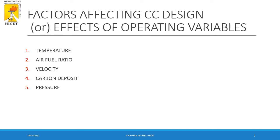The factors affecting combustion chamber design — also called the effect of operating variables — are temperature, air-fuel ratio, velocity, carbon deposits, and pressure. In a gas turbine engine, the maximum temperature in the Brayton cycle is the turbine inlet temperature. Due to structural constraints, we must maintain temperature within the designed value, or else it will lead to various structural defects. So the first factor that affects the combustion chamber design is temperature.